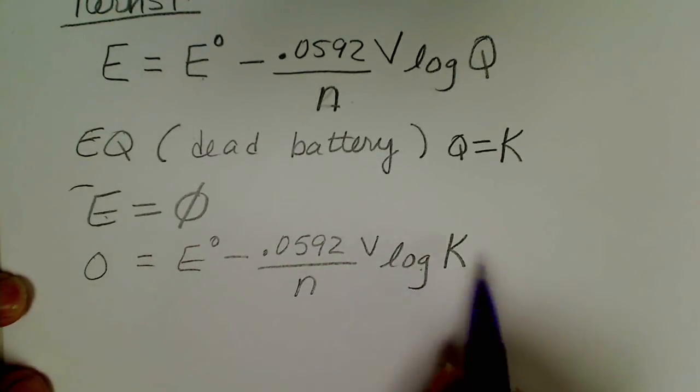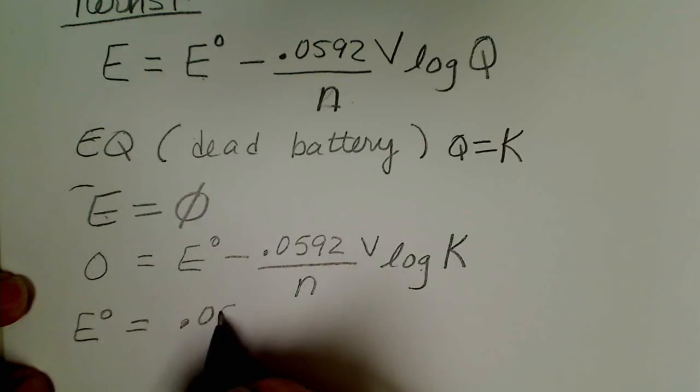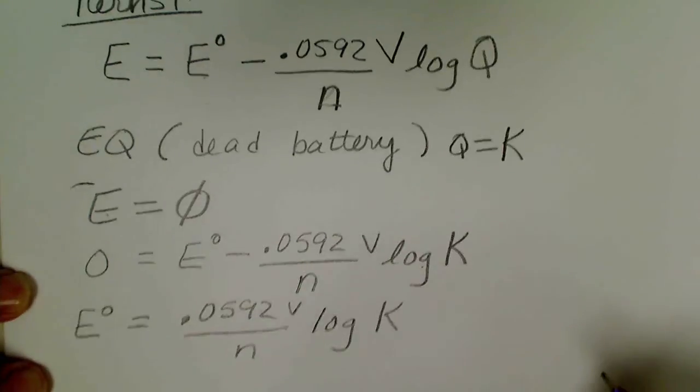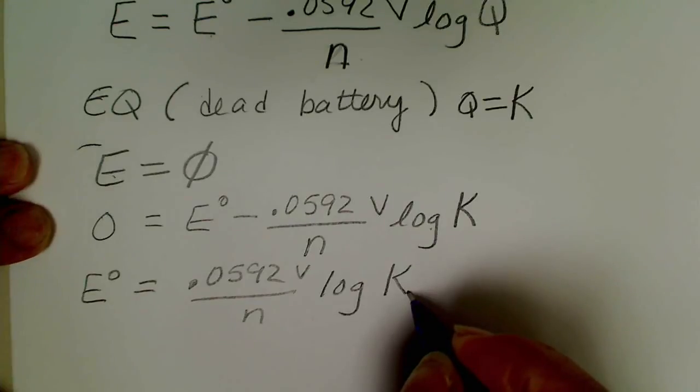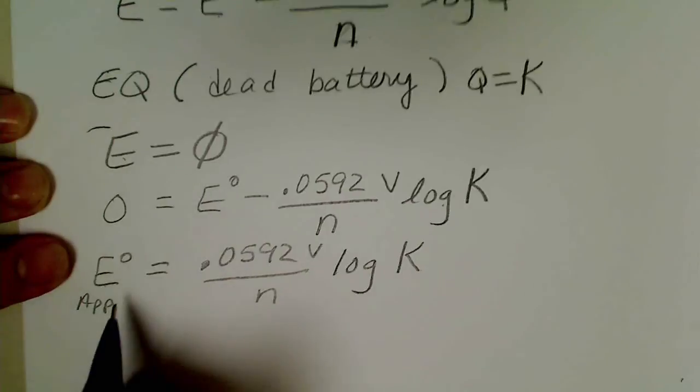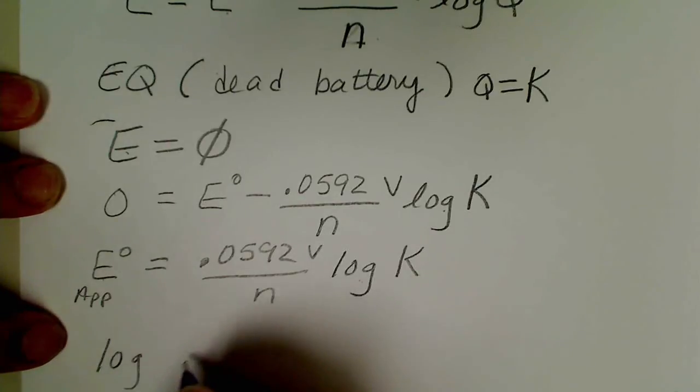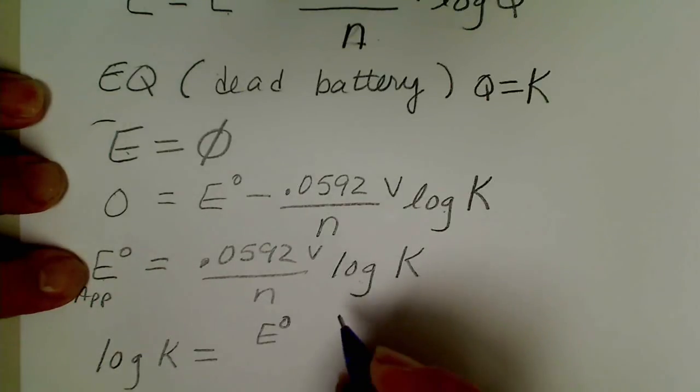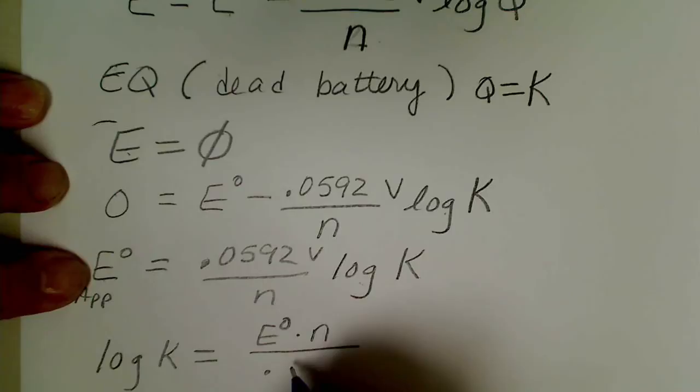So if we rearrange this equation to solve for K then E° is positive 0.0592 volts divided by n log K. If I want to solve for the equilibrium value for an electrochemical cell I just look up the appendix values and do this calculation, rearrange the equation. So that means log K is equal to E° times n divided by 0.0592 volts.